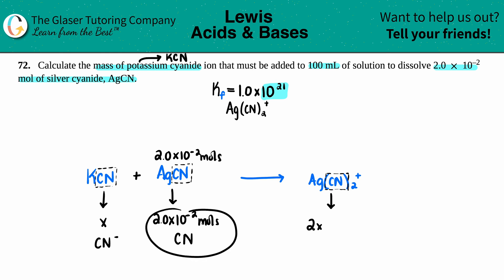Two times what? Well, if the cyanide moles was 2.0 times 10 to the negative second moles, that's the number I'm going to be multiplying by two. Two times 2.0 times 10 to the negative second gives us a total of 4.0 times 10 to the negative second moles of CN minus. But now where did that other two come from?